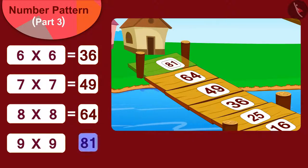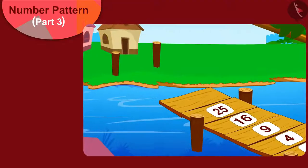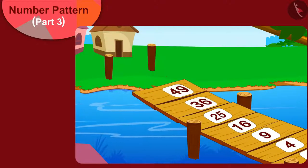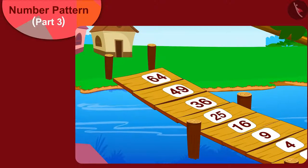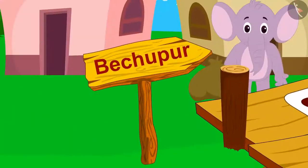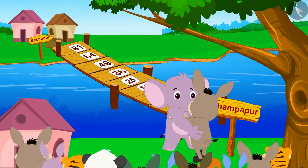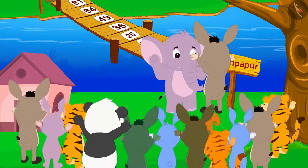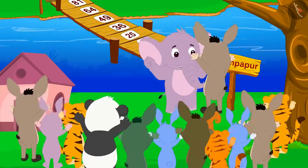The villagers also together wrote these numbers on the bridge, and finally the bridge between Champapur and Bethupur was completed. All the villagers started dancing happily.